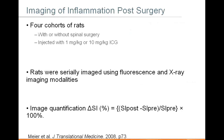Other researchers took a slightly different approach. Because ICG binds to serum proteins, at sites of inflammation where you have leakiness of the vasculature, those serum proteins could collect at inflammatory sites and bring ICG along with them. To test this, Meyer et al. conducted a study involving surgery on rats, then injected them with different doses of ICG, quantified the signal by normalizing to pre-injection autofluorescence, and imaged over time to find the optimal time and dose for tracking inflammation.